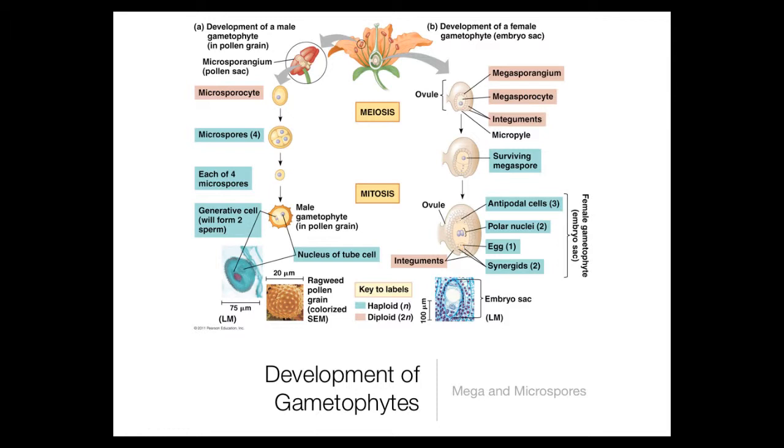First thing we need to talk about is the development of gametophytes. Gametophyte is just the egg or the sperm. Plants do have eggs and sperm. The sperm is carried in pollen and that develops on the anther of a flower. So the anther is right here, it's the piece that sticks up above.